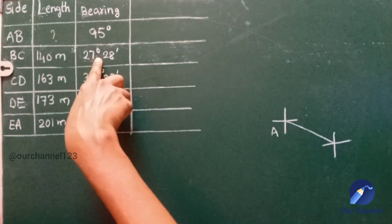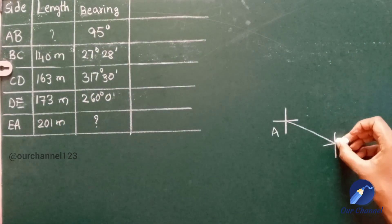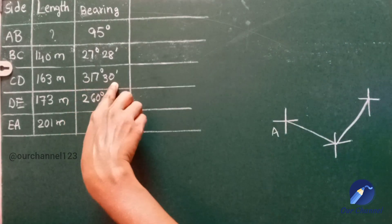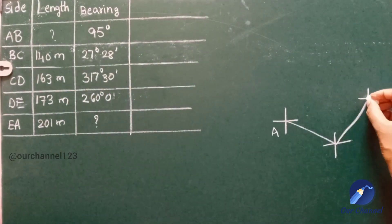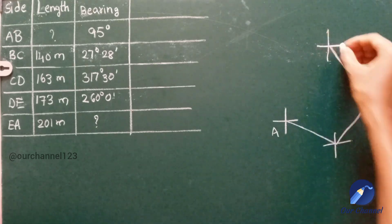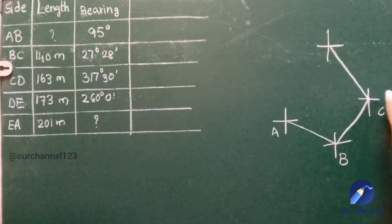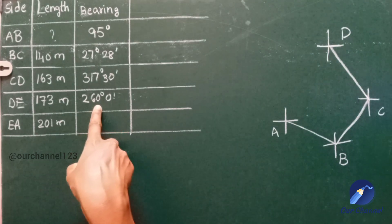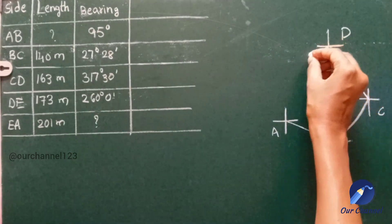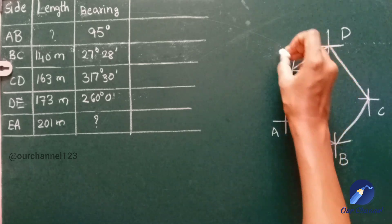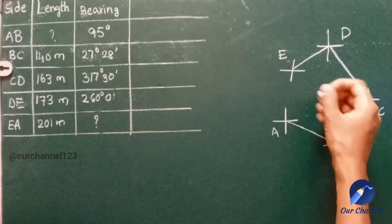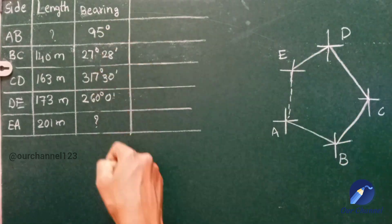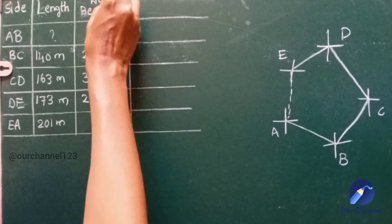BC at 27 degrees 28 minutes will come in the first quadrant. CD at 317 degrees 30 minutes will come in the fourth quadrant. Bearing of DE is 260 degrees 0 minutes, so it will come in the third quadrant. We don't know the bearing of EA, so let us draw some dotted lines. These bearings are whole circle bearings and we will convert them into reduced bearings.